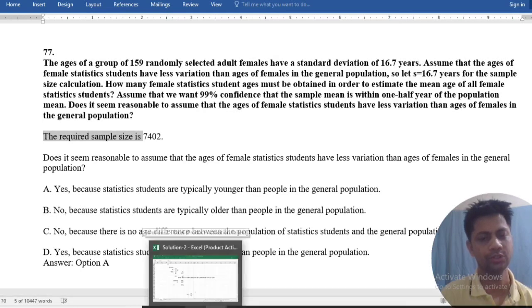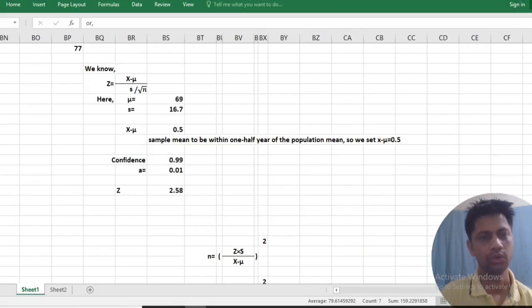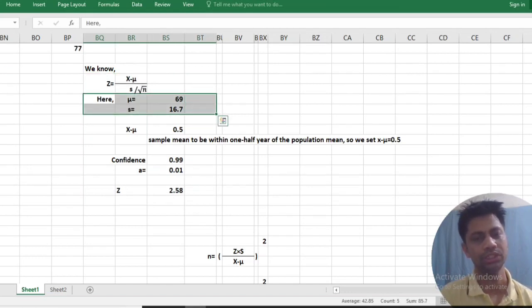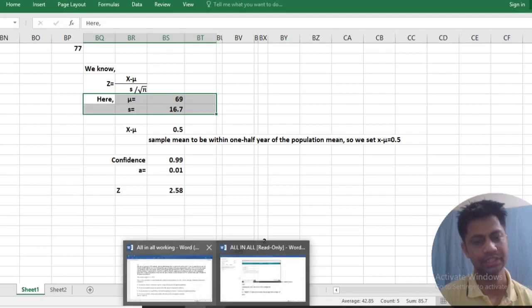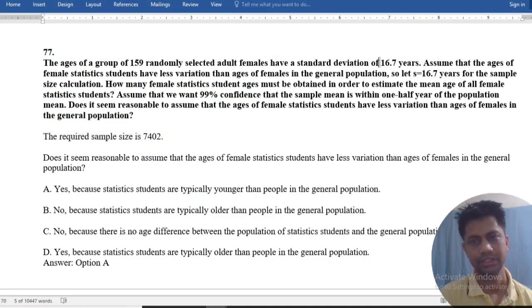Let's go through the solutions. We know that Z means this, and here mu is equal to 69, and standard deviation is 16.7.